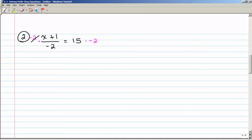And so then these are going to cancel each other out because one's on the top and one's on the bottom. So I have x plus 1 equals negative 30. And now subtracting 1 on both sides, x is equal to a negative 31.